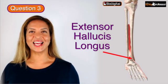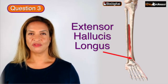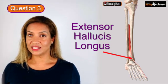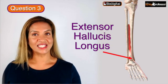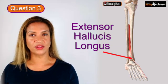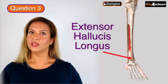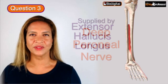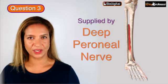Question 3 is extensor hallucis longus, which is found in the anterior compartment of the leg. It does exactly what its name suggests. It extends the hallux, which is another name for big toe, and it is a long muscle. So extensor hallucis longus is a perfect name for this muscle. It is supplied by the deep peroneal nerve.